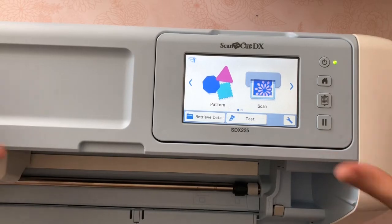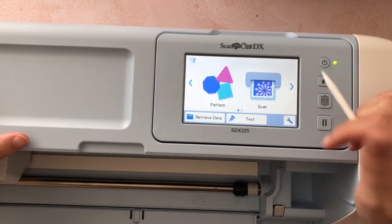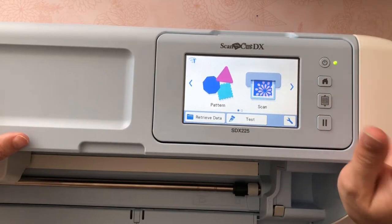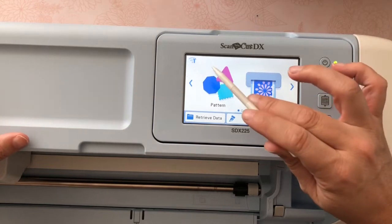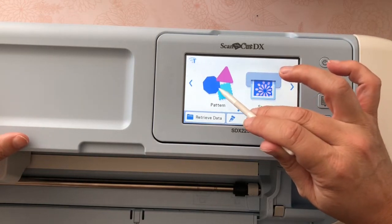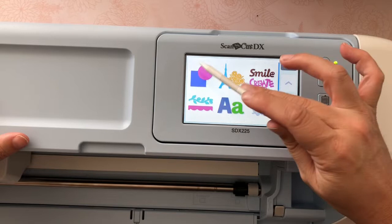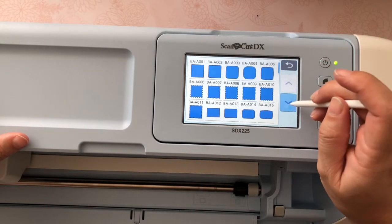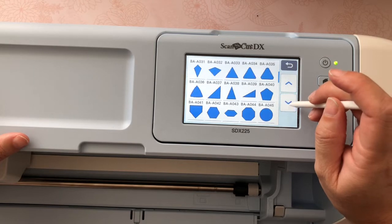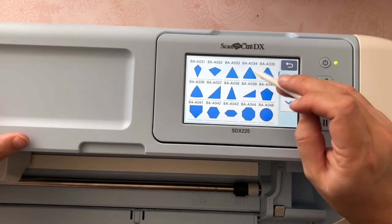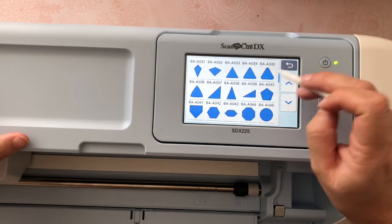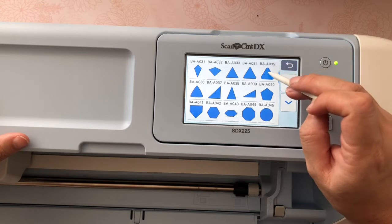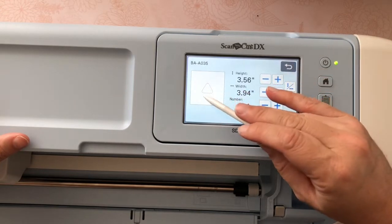Hey guys Mae Flom here with the Scan and Cut DX and I am going to make a candy corn hair barrette accent. The first thing I'm going to do is go into pattern and right in here and then I'm going to scroll down, oops there it was, and I like this one with the super angled, this really rounded corners.